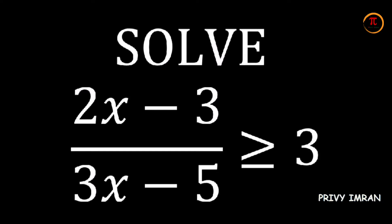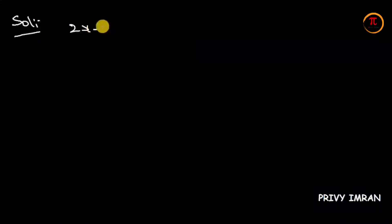Hello friends, I am Privy Imran and welcome to my channel. Today we are going to solve the linear equation: (2x minus 3) divided by (3x minus 5) is greater than or equal to 3.